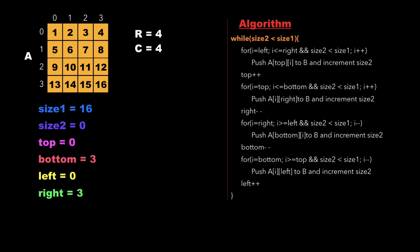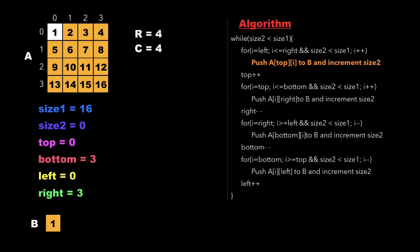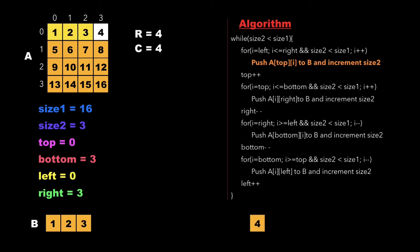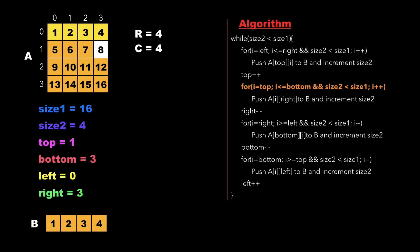Since 0 is less than 16, we enter the while loop and start a for loop from i equal to left to right, checking whether size2 is less than size1. Since 0 is less than 16, we create an array b and push 1 to it and increment the value of size2. We keep on doing this until i reaches right. We've reached a point where i is equal to right, so we run out of the for loop and increment the value of top. The updated value of top is 1, and we start another for loop from i equal to top to bottom, still checking whether size2 is less than size1. Since 4 is less than 16, we push element 8 to b and keep doing this until i is equal to bottom.